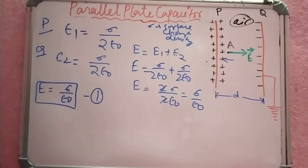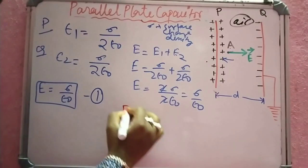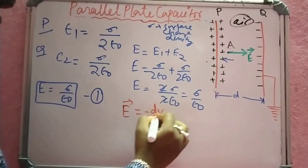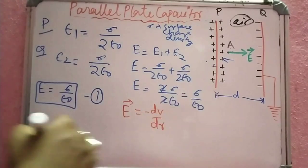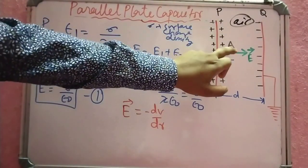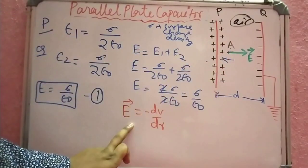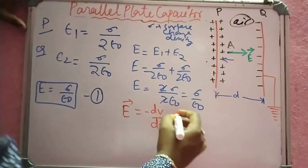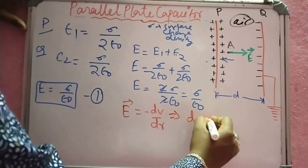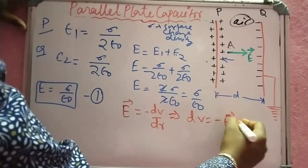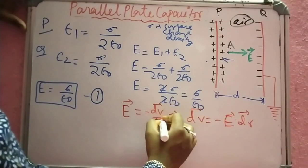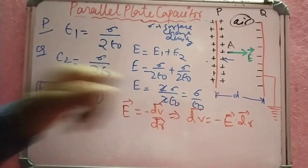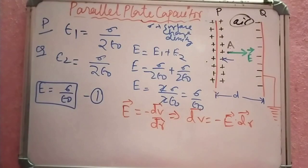Now, the relation between potential gradient and electric field intensity is E is equal to minus dV by dr. So the electric field intensity formula is E equals minus dV by dr, and therefore dV is equal to minus E dot dr, where this is a vector quantity.